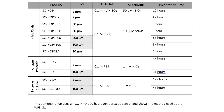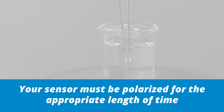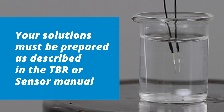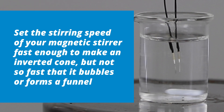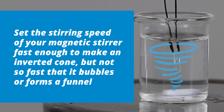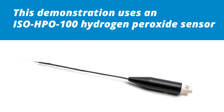Before we begin, make sure you have the appropriate solution and calibration standard required for your sensor. Your sensor must be polarized for the appropriate length of time, and your solution must be prepared as described in the TBR or the sensor manual. Set the stirring speed of your magnetic stir fast enough to make an inverted cone, but not so fast that it bubbles or forms a funnel. This demonstration uses an ISO HPO100 hydrogen peroxide micro sensor and shows the method used at the WPI labs.